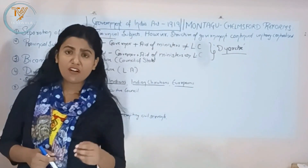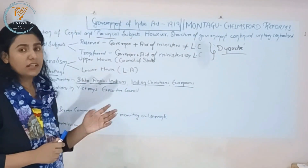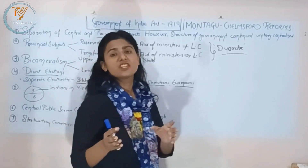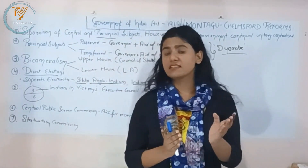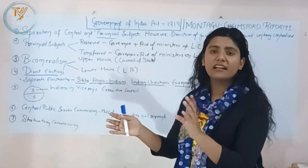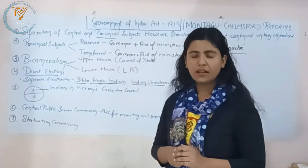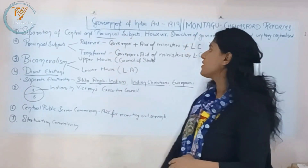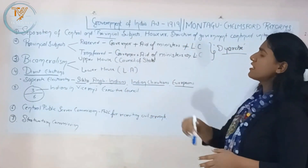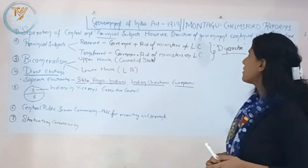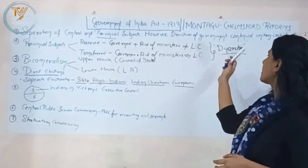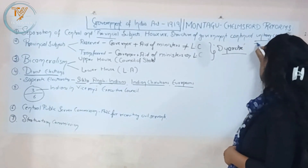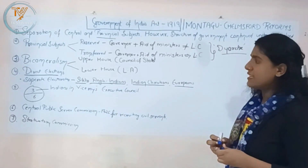The Office of the High Commissioner was established in London. The provincial and central budgets were separated. The two major topics were the separation of central and provincial subjects, and the structure of government continued to be unitary and centralized.